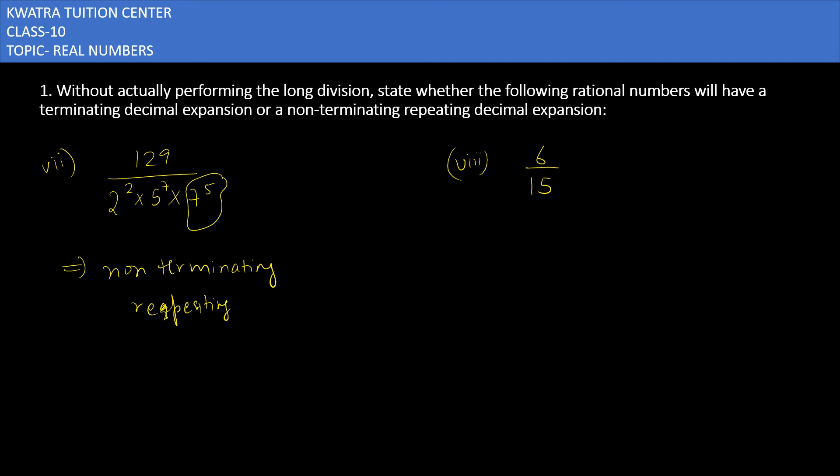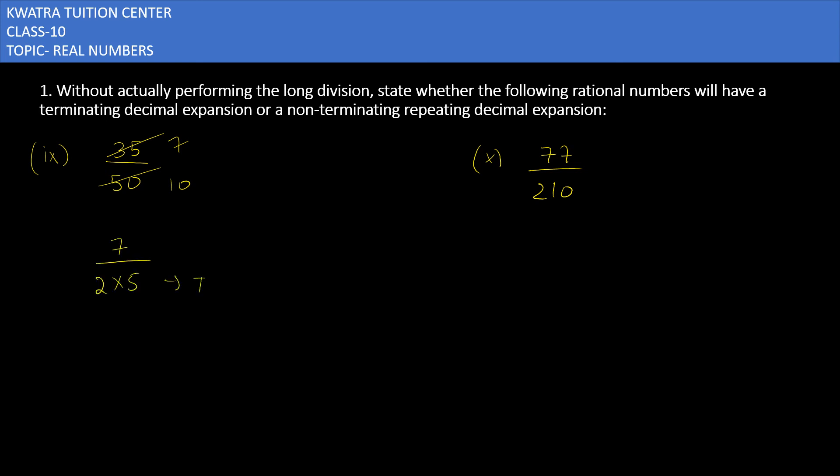Now the next one is 6 over 15. How can you mention 15? You can write it as 3 into 5. Or 6 or 5, 15 cancel. 2 and 5. So in our denominator it has 5 as a factor. So what does this mean? That this is terminating. Now moving to the ninth one, it has 35 over 50. First I can see that this can be reduced, 7 over 10. And what is the number of 7 over 10? We can write 10 into 5. So this is going to be terminating. If 2 and 5 are two factors, then it will be terminating.